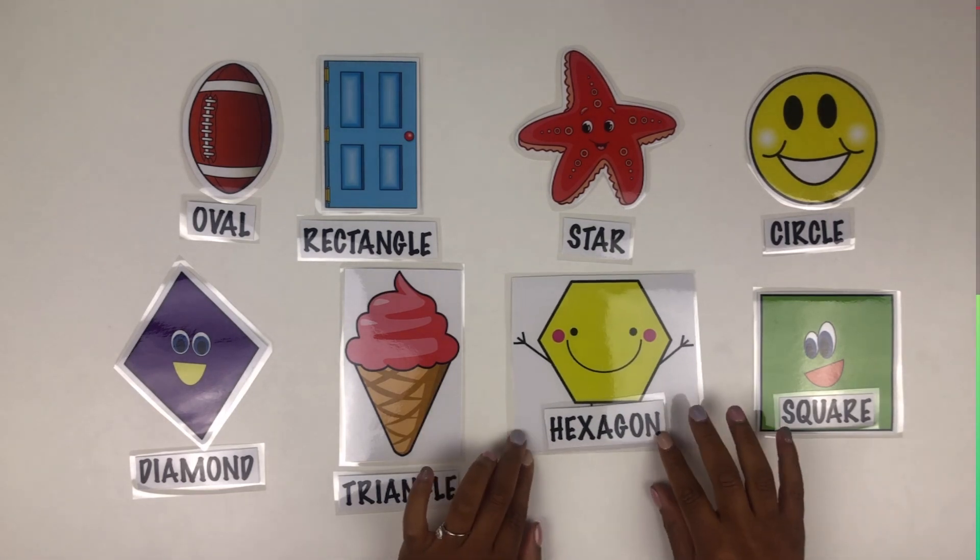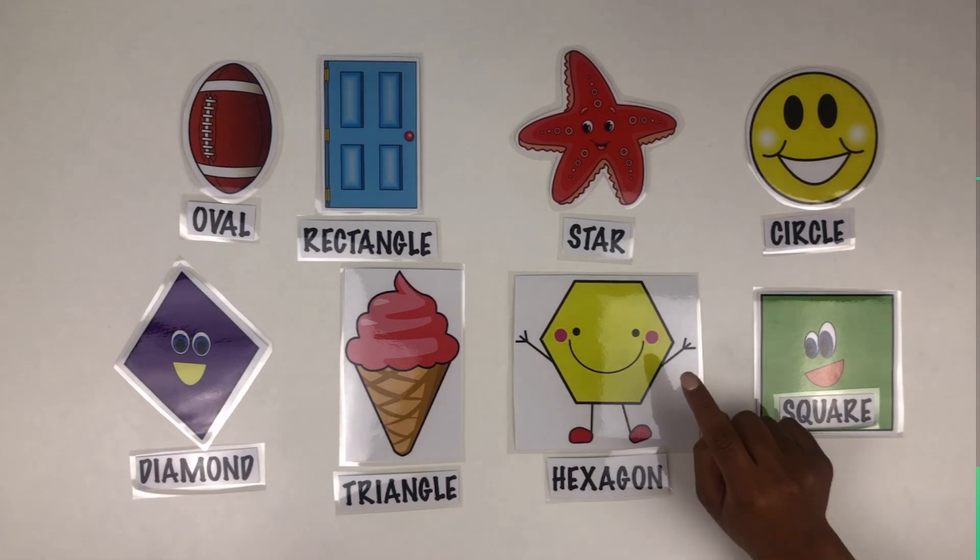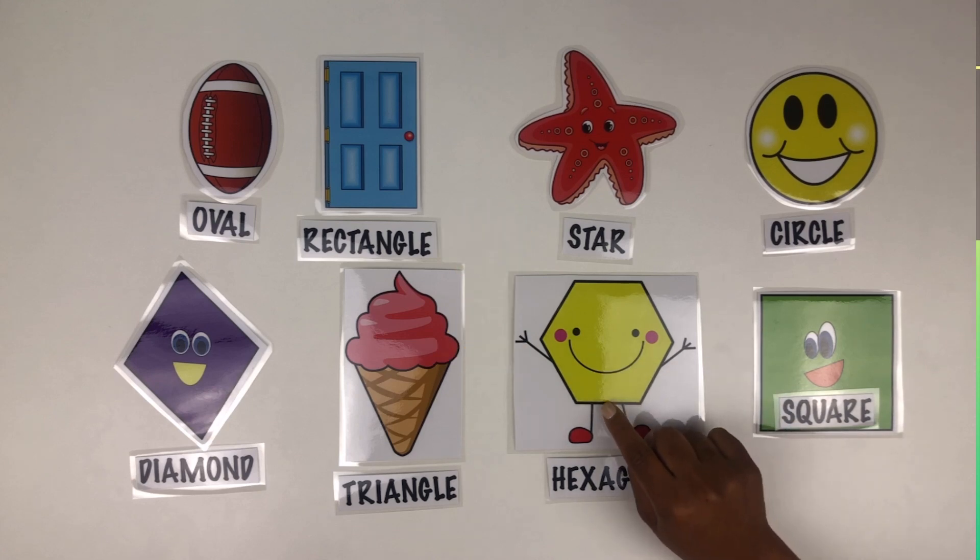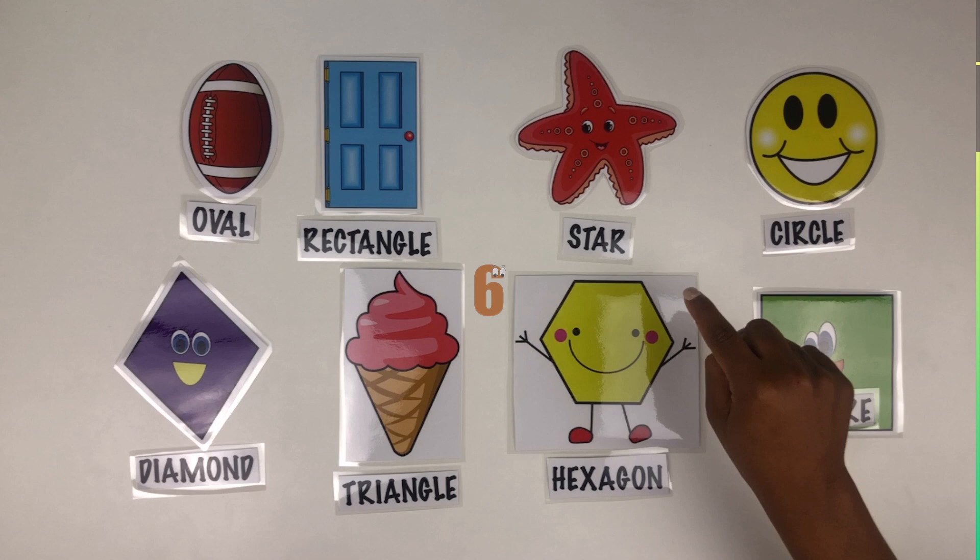How about a hexagon? Mr. Hexagon. A hexagon has one, two, three, four, five, six sides. Well done.